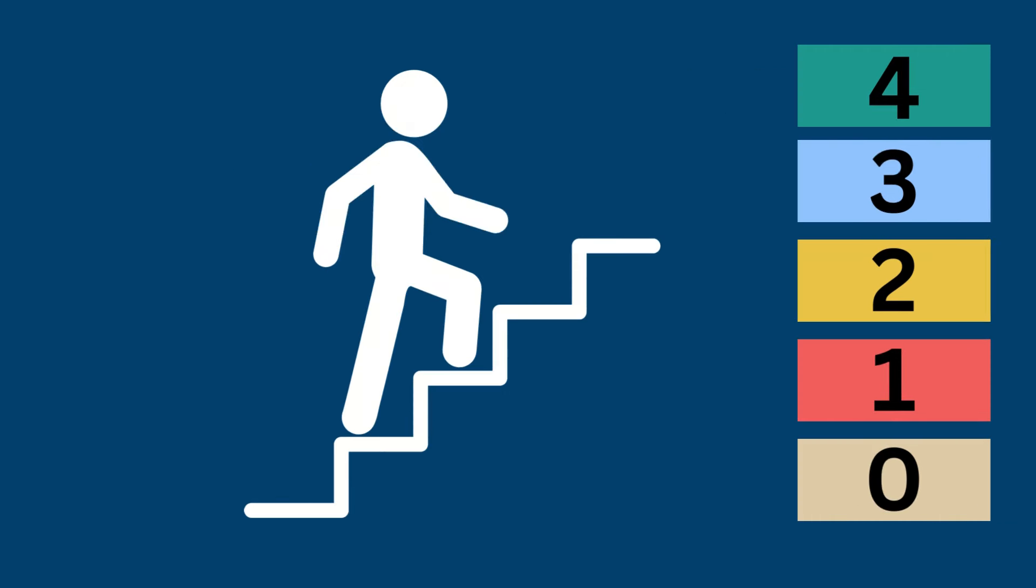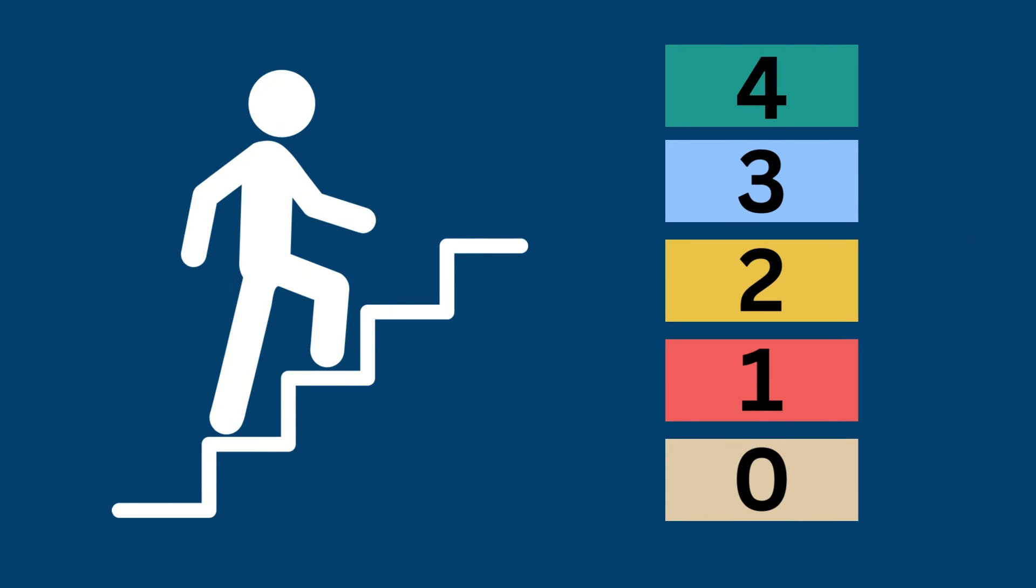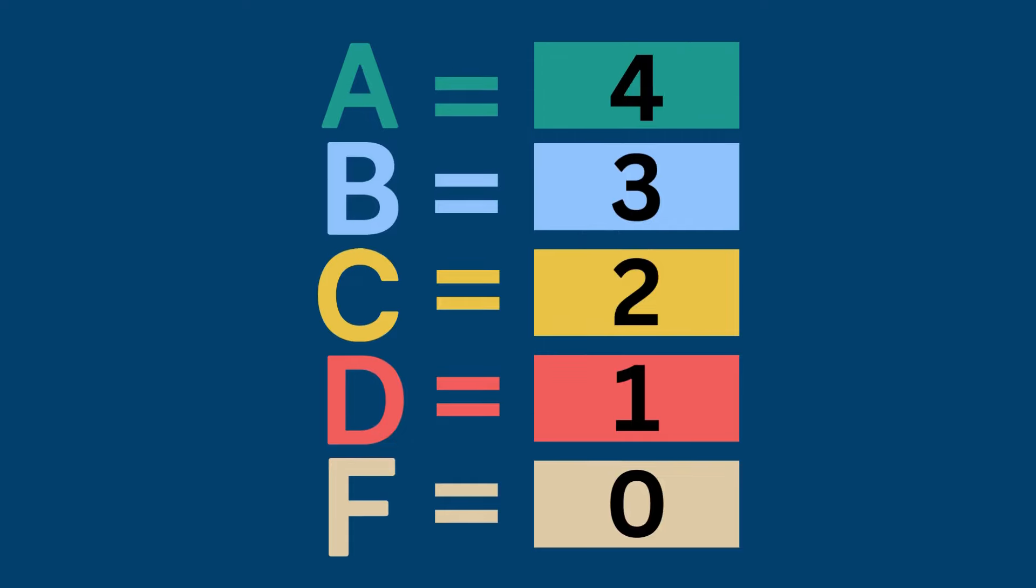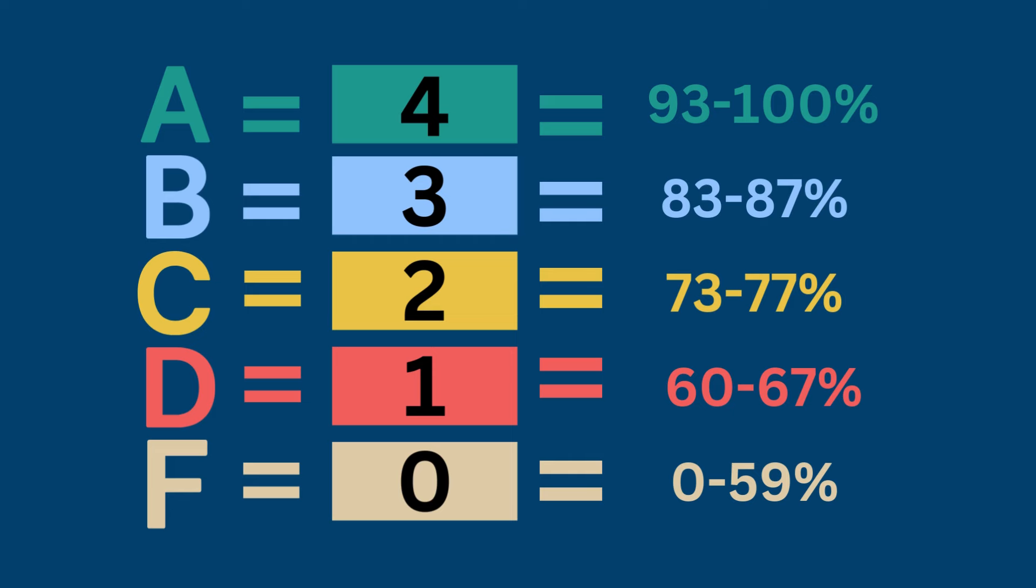Each level describes the progression of what a student knows and is able to do for that particular skill or concept. Each level also corresponds to a letter grade, A through F, and a percentage point, 0 through 100.